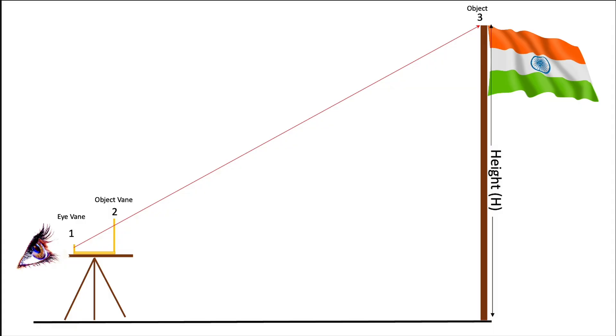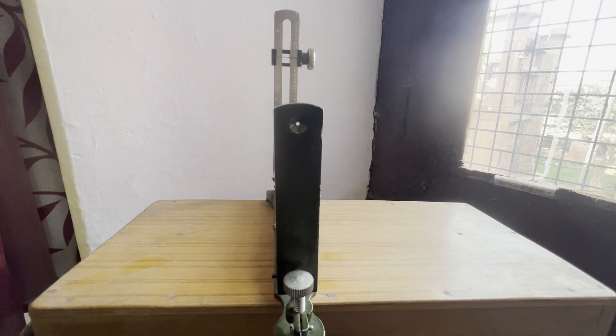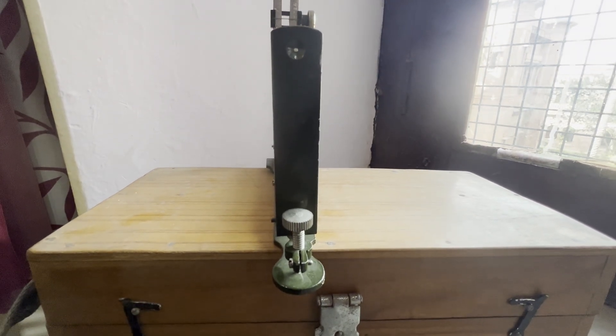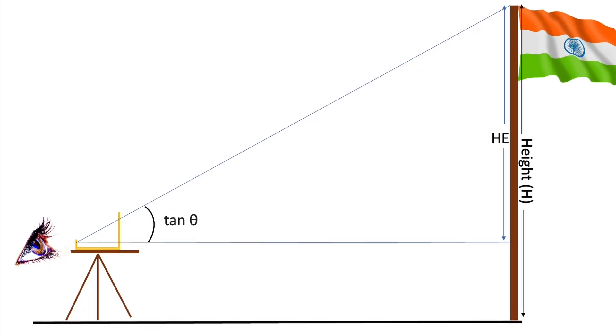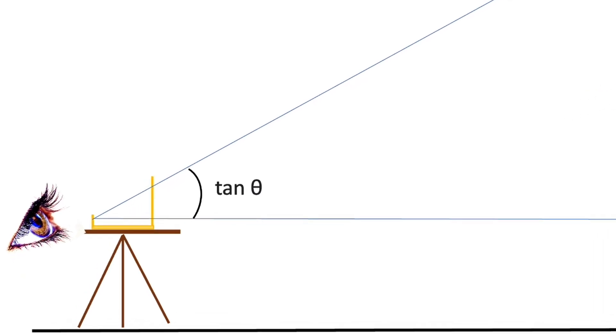Then we look at the object through the eye vane and object vane, making sure the crosshair coincides with the object. This gives us the tan value.